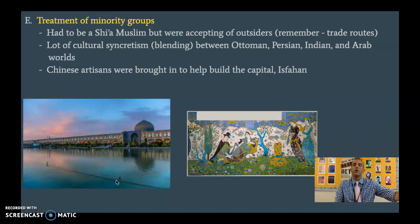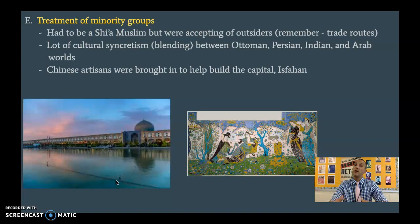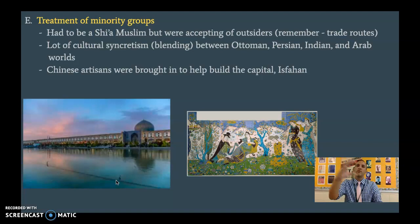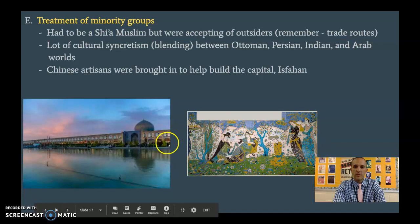They're also accepting of outside ideas, and we're going to see a lot of blending in this region between Ottoman Empire ideas, Persian ideas, Iranian ideas, Indian ideas, and Arab ideas — a lot brought together. The Safavid Empire also brings in Chinese artisans, architects to build up their capital, build roads, buildings, and bridges. So they bring people in from the outside, which is that contradiction: you've got to be like us, but at the same time we're open to the ideas of others. There's art from the Safavid Empire that really almost looks Chinese.